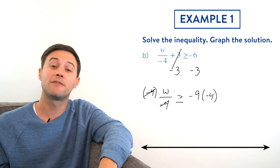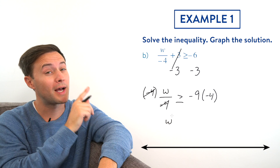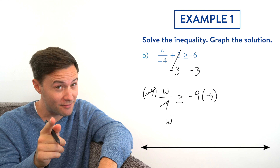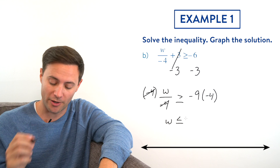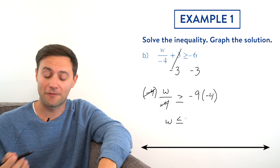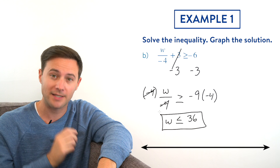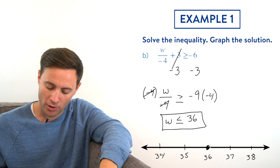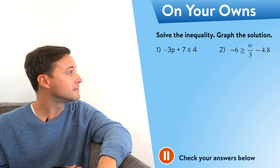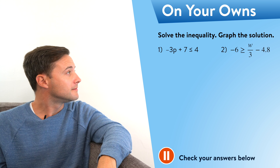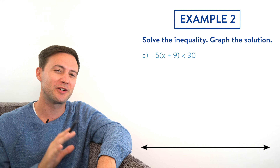Let's try part b. w over negative 4 plus 3 is greater than or equal to negative 6. Same thing — we're first going to get rid of that plus 3. To do that we use the inverse operation of addition, which is minus 3, and do the exact same to both sides. That goes away and we're left with w over negative 4 is greater than or equal to negative 9. Now w is being divided by negative 4, so the inverse operation is multiplication — multiply both sides by negative 4. Those simplify and we're left with w.